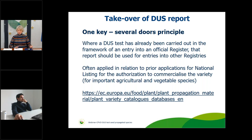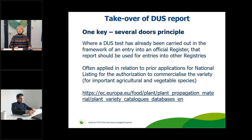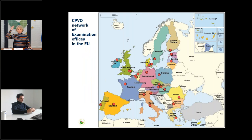This possibility of taking over DUS reports exists since a long time between UPOV members. In Europe we call it the 'one key, several doors' principle — where the DUS test has already been carried out for an official register, it should not be carried out a second time, saving time and money. This is often related to prior applications for national listing, which is the authorization for commercialization of varieties within the EU. The obligation to be listed in the so-called Common Catalogue relates to important agricultural and vegetable species mentioned in the EU seed directives.